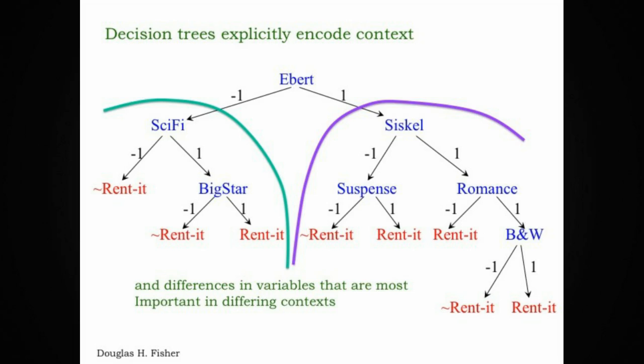Another important characteristic of decision trees is that they explicitly encode context. And this can be quite nice from a knowledge representation standpoint. In this particular decision tree, the subtree to the left, corresponding to the situation in which Ebert doesn't like something, defines a situation in which some variables dominate and some rules dominate, sci-fi and big star for example. Whereas the other subtree characterizes the situation in which Ebert does like something. And in that space, other variables dominate and other rules dominate. So this characteristic of explicitly encoding context can be quite nice. And we can apply it recursively, so that deep subtrees in the decision tree correspond to very specialized contexts.